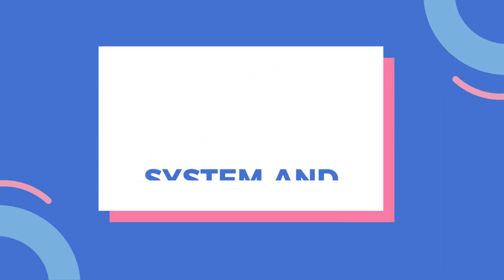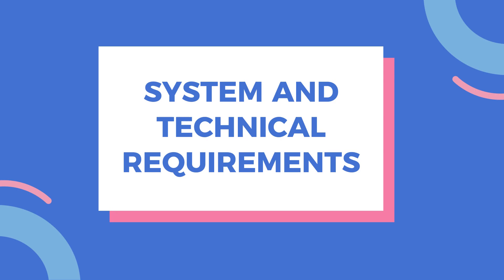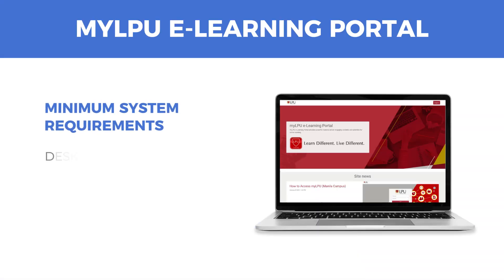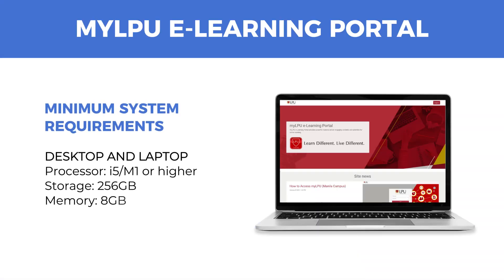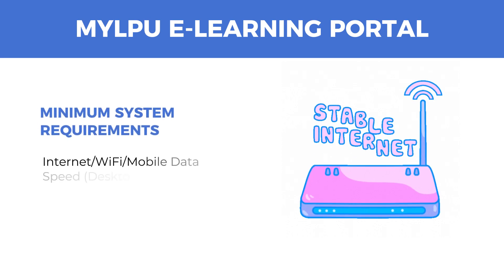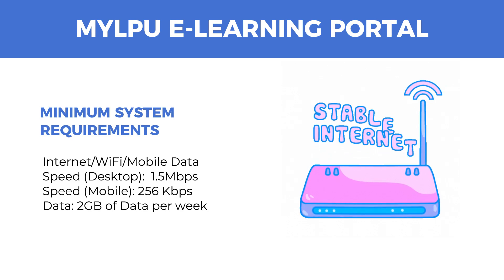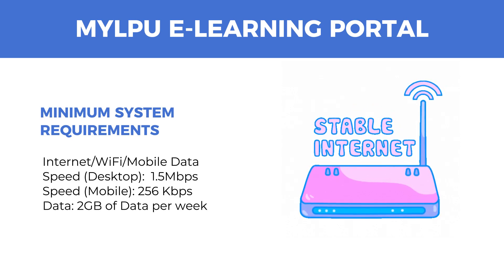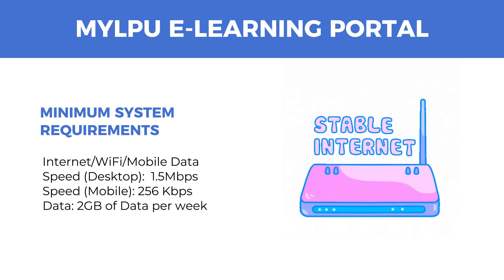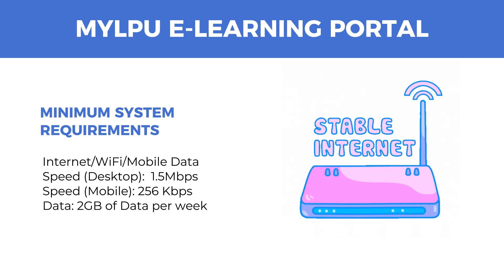To have a better and smooth experience, we recommend that you have a device with the following minimum specifications. If you are using a desktop computer or laptop, the processor should have at least Intel i5, M1, or higher, 256GB of free space, and 8GB of memory. It also requires at least 1.5MB of internet speed for desktop or laptop and 256MB for mobile. MyLPU eLearning consumes 2GB of data per week.